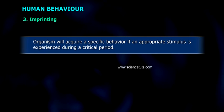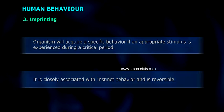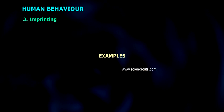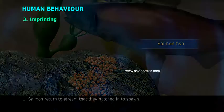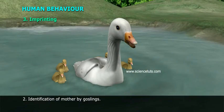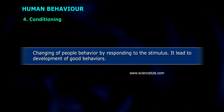Imprinting: organisms acquire a specific behavior if an appropriate stimulus is experienced during a critical period. It is closely associated with instinct behavior and is reversible. Examples: one — salmon return to the stream that they hatched in to spawn; two — identification of mother by goslings.